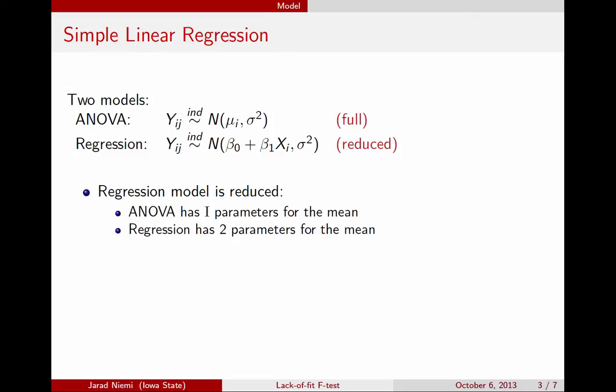But it turns out that we can write mu_i equals beta_0 plus beta_1 x_i. So the ANOVA model, if we were to plug in this beta_0 plus beta_1 x_i, we were just to plug this one in right there, then the ANOVA model would become the regression model. And therefore the regression model is a reduced version of that ANOVA model.